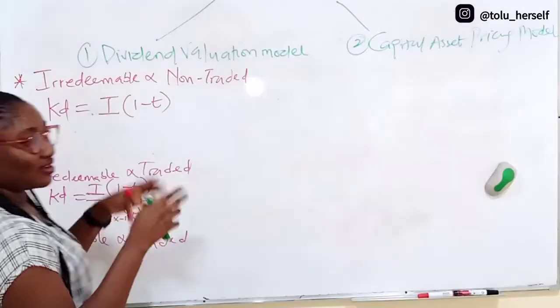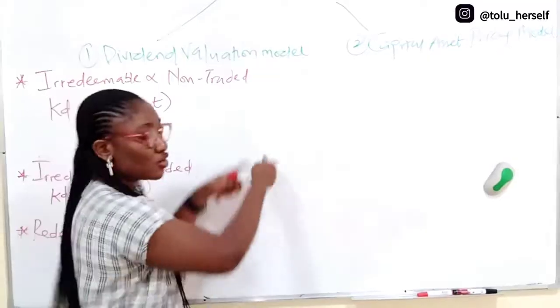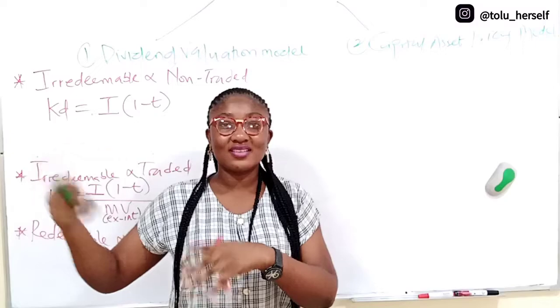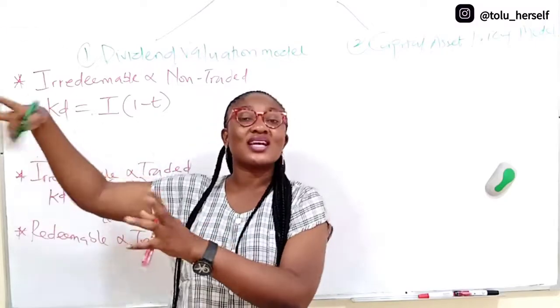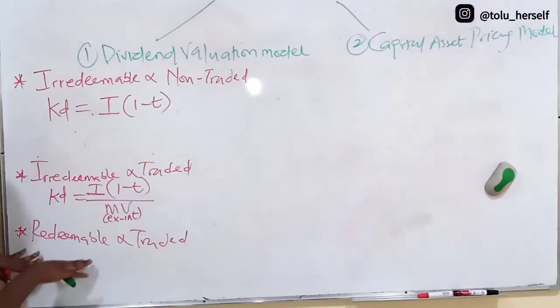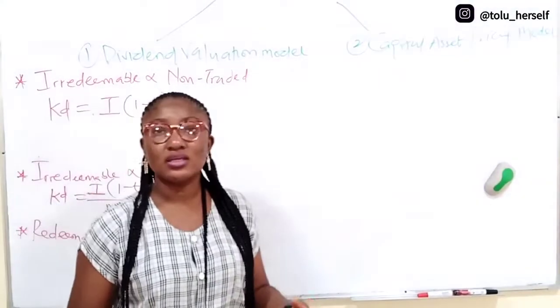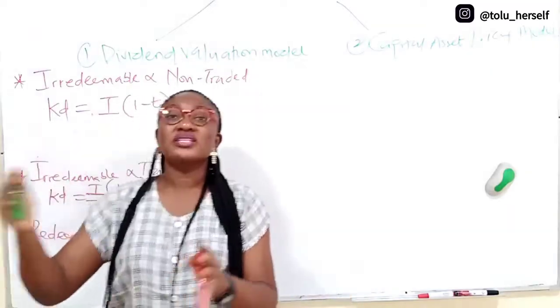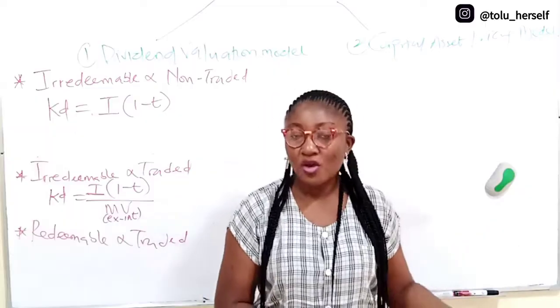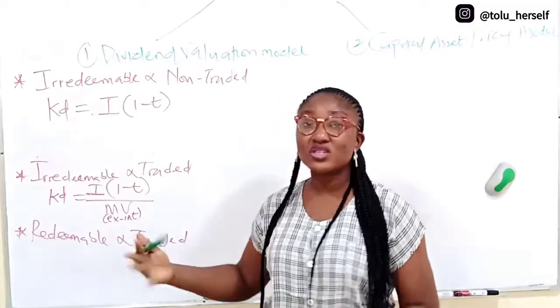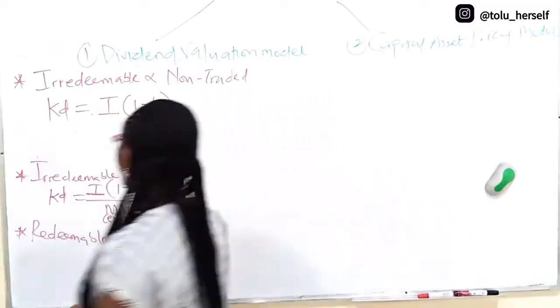So that's the whole concept of post-tax, one minus T and all those things. The tax authority said that interest on loan, you should deduct before taxes, so the debt holders don't suffer taxes. When a debt is redeemable and traded, it means that this debt has a date whereby you will pay back the principal. There is a repayment date, maybe in 5 years time to be redeemed at either par or at discount or at premium.